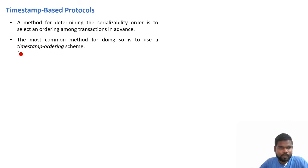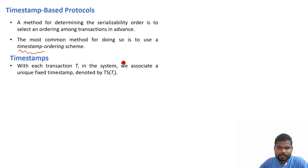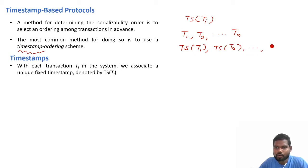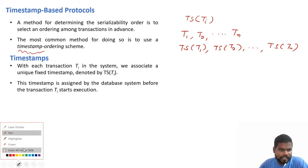So what is a timestamp? With each transaction Ti in the system we associate a unique fixed timestamp denoted by TS(Ti). The short form of timestamp is TS. Each transaction is associated with a fixed timestamp TS(Ti). So in any schedule if we have transactions T1, T2, ... TN, then each transaction has a fixed timestamp such as TS(T1), TS(T2), and so on up to TS(TN).